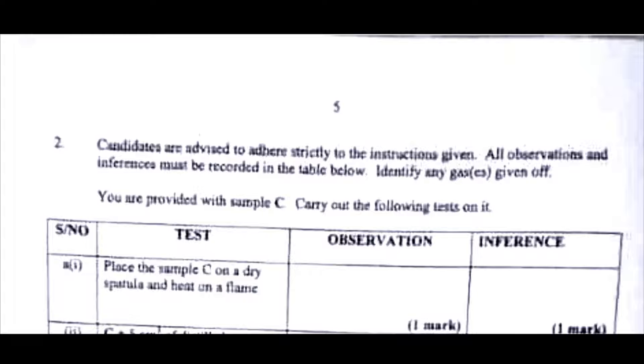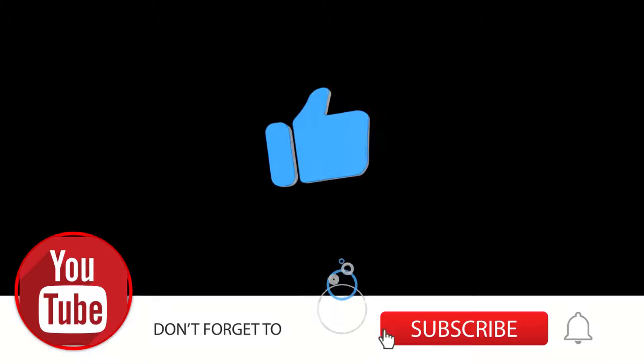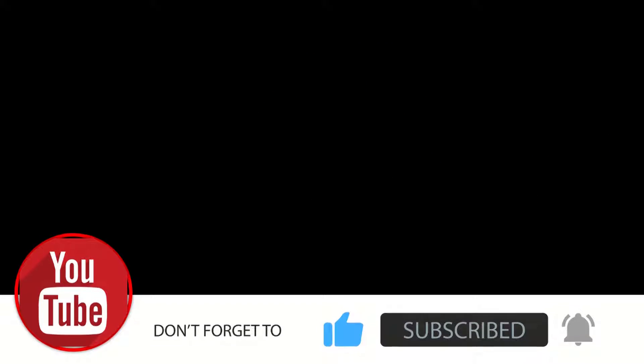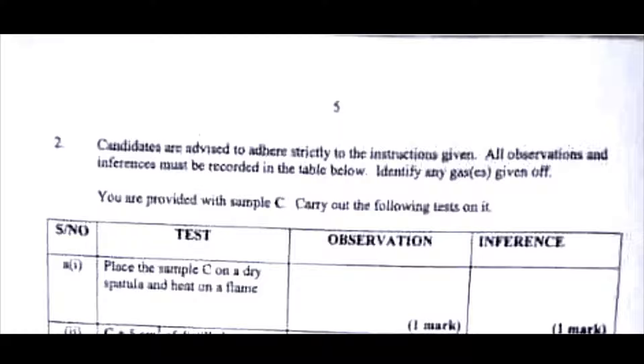The whole purpose of this correction is not just for the NECO students that just finished the exams, but also to help those that will be writing the GCE to learn how they're expected to answer their practical questions. Question two: candidates are advised to adhere strictly to the instructions given. All observations and inferences must be recorded in the table below. Identify any gas or gases given off. You are provided with sample C.